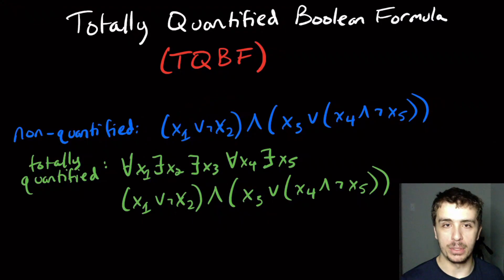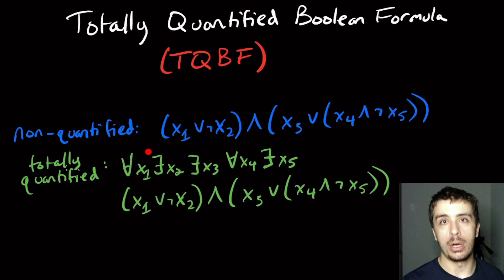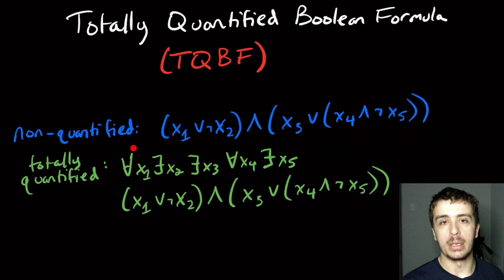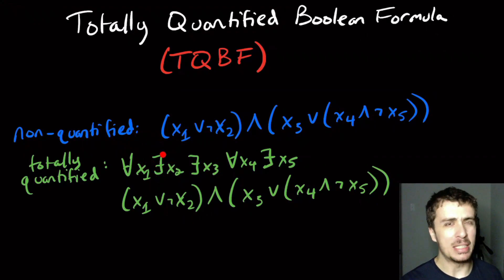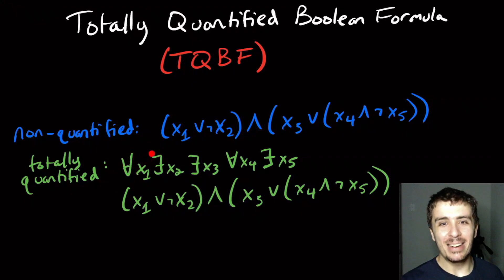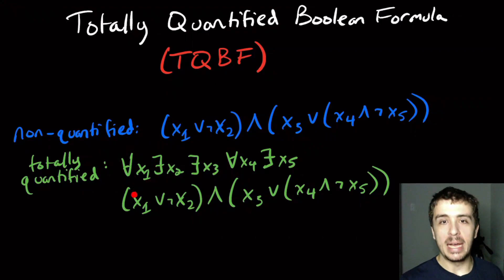A quantified formula is where you have some quantifiers on the variables. There are two of them: the upside-down A, which means 'for all,' and the backwards E, which means 'there exists.' The notation is a bit unusual — not sure why they didn't just use capital A and forward E — but that's the standard notation used.